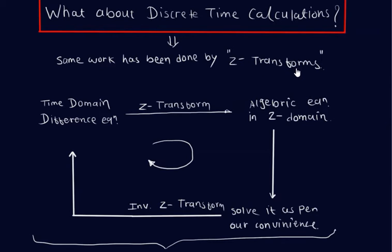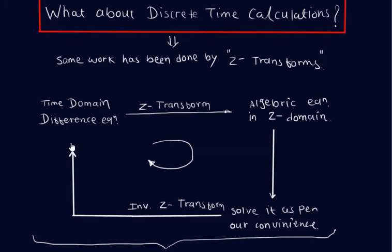To solve discrete-time domain difference equations, we directly apply the Z-transform. After applying the Z-transform we obtain an algebraic equation in the z-domain. We then solve it conveniently, and finally apply the inverse Z-transform to get back to the time domain. This entire cycle is used to solve the difference equation in the time domain.